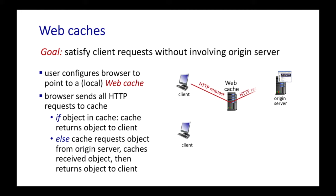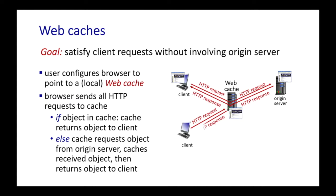In this animation, you can see caching in action. The client on the top first makes an HTTP request, it's routed to the cache, but the content is not found in the cache. So the cache requests the object from the origin server. The object is returned from the origin server, cached at the cache, and the response is provided to the client. Now a second client comes along, makes an HTTP request for the same object, and in this case the object is in the cache and returned immediately.